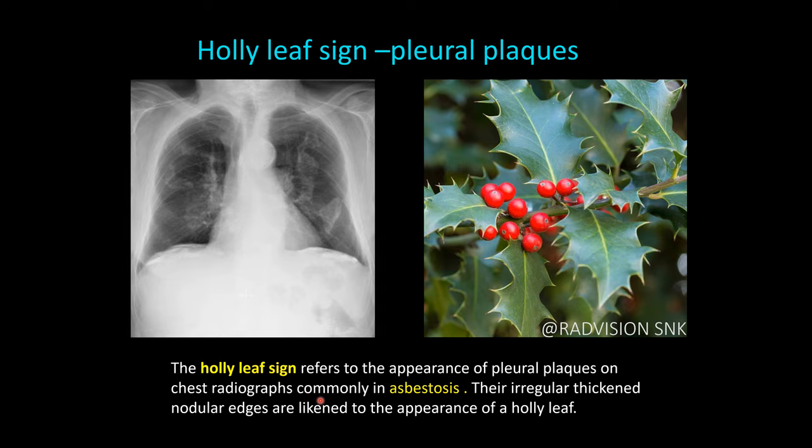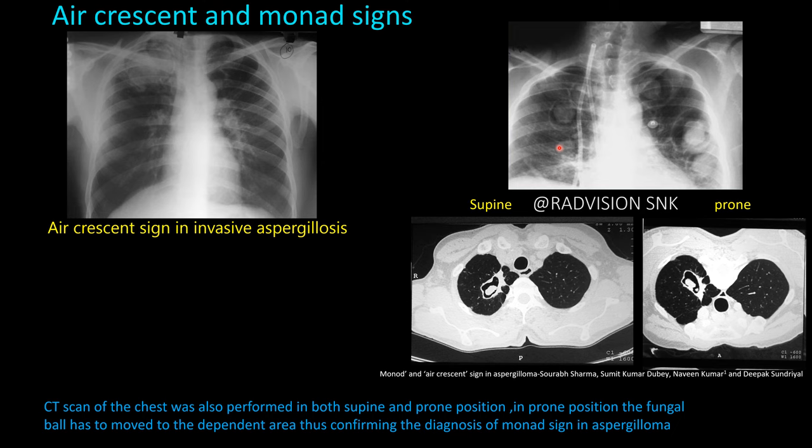Next case: you can see there is a cavitary lesion with a mass or ball-like structure noted within the cavity, surrounded by a typical air crescent sign. This is the air crescent sign seen in invasive aspergillosis. Coming to the other sign — Monod sign — most people will confuse between air crescent sign and Monod sign.